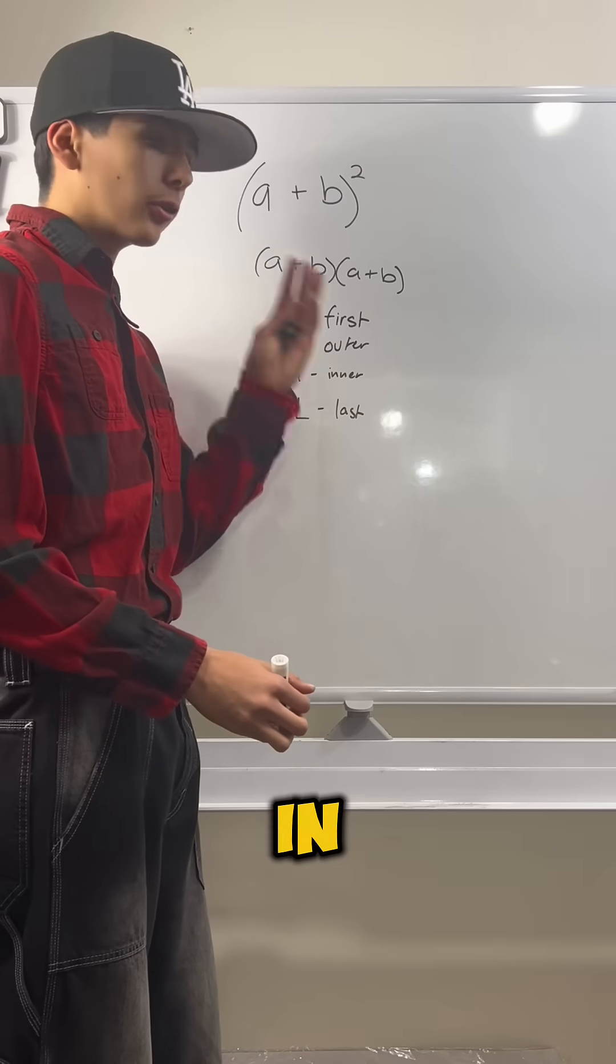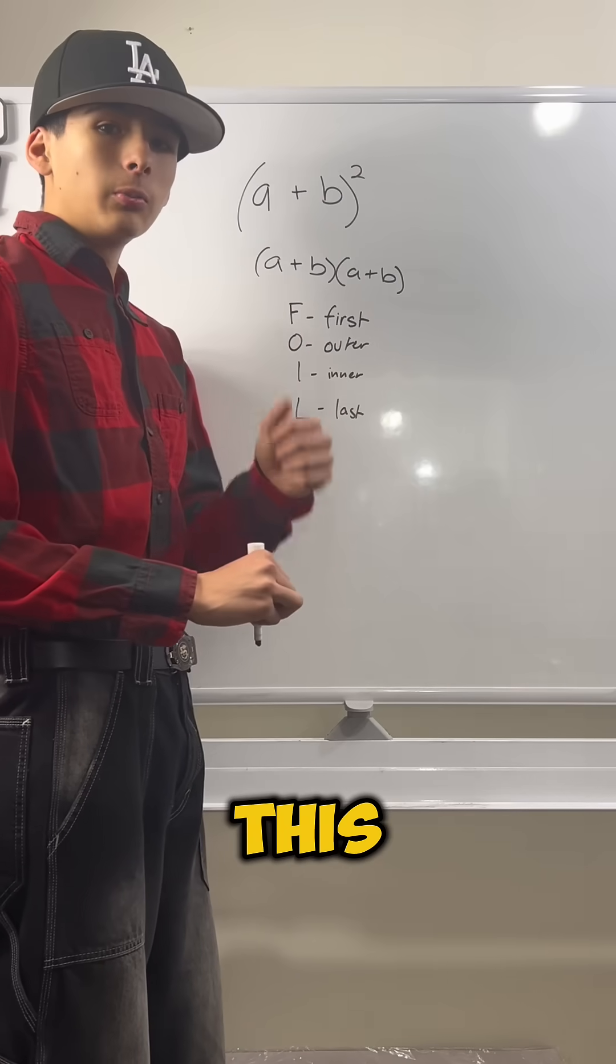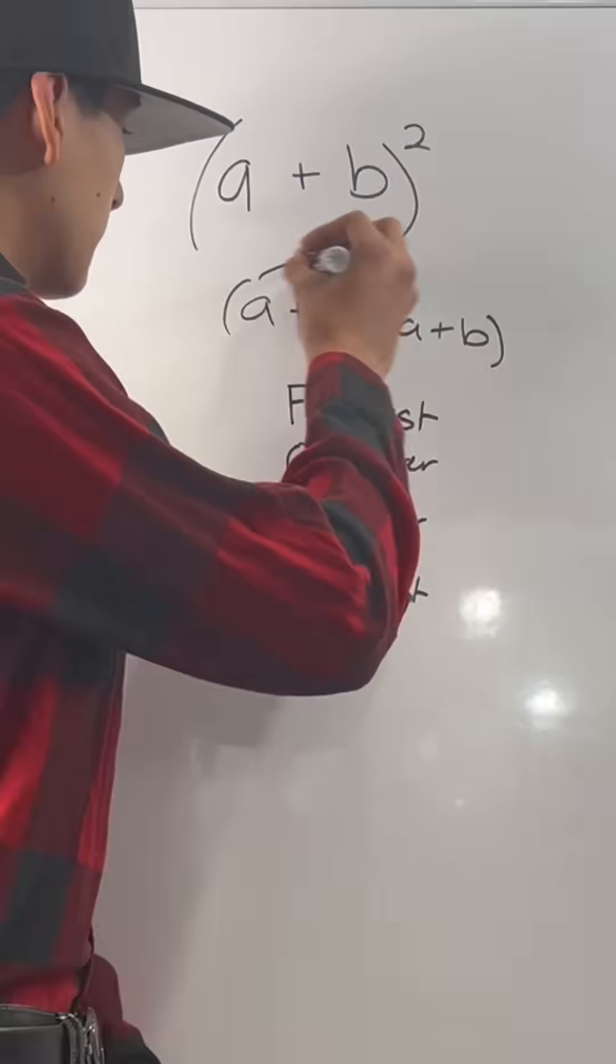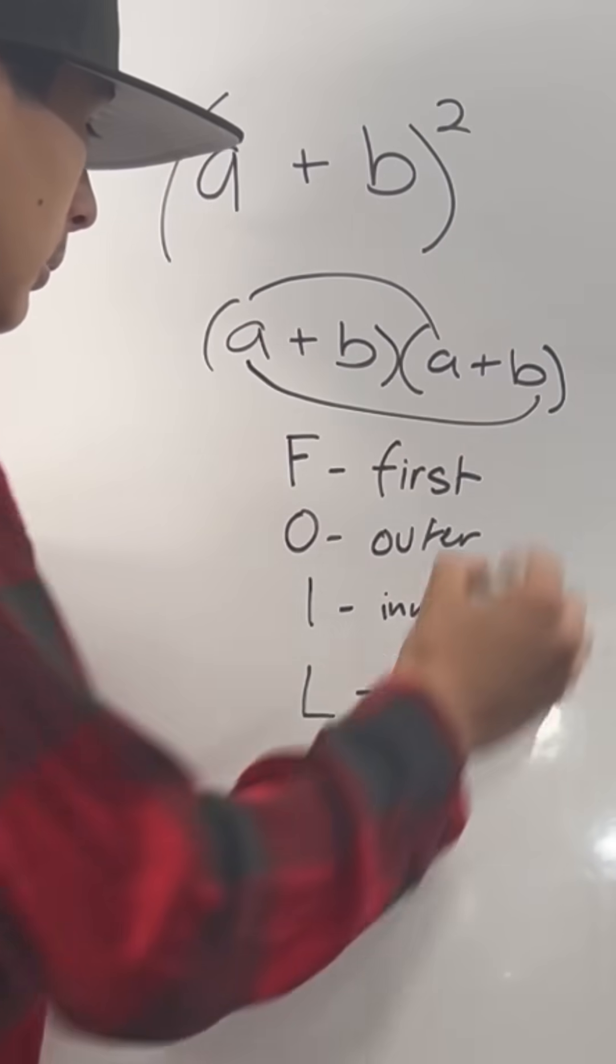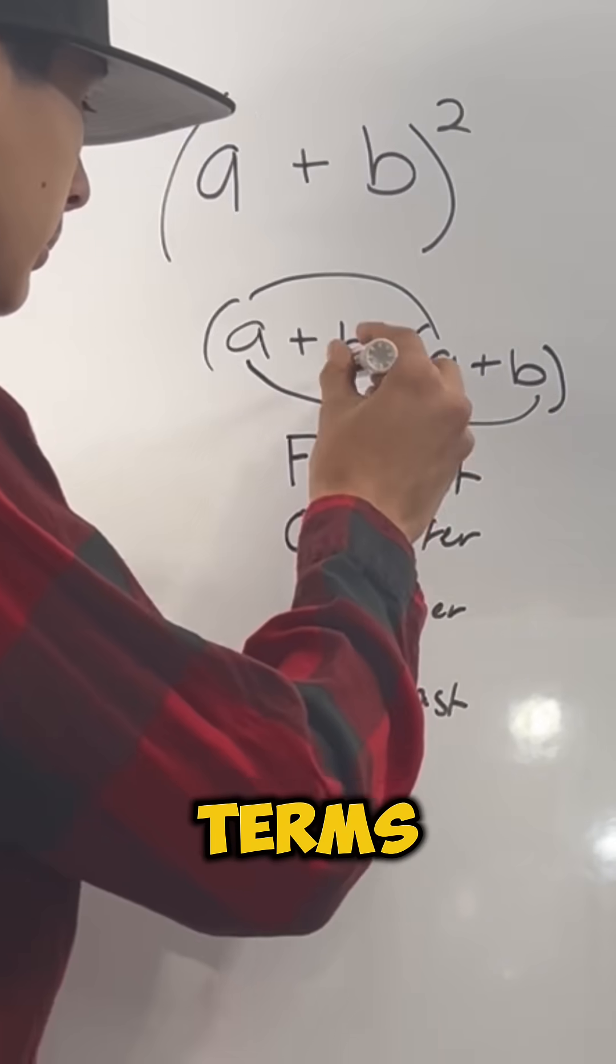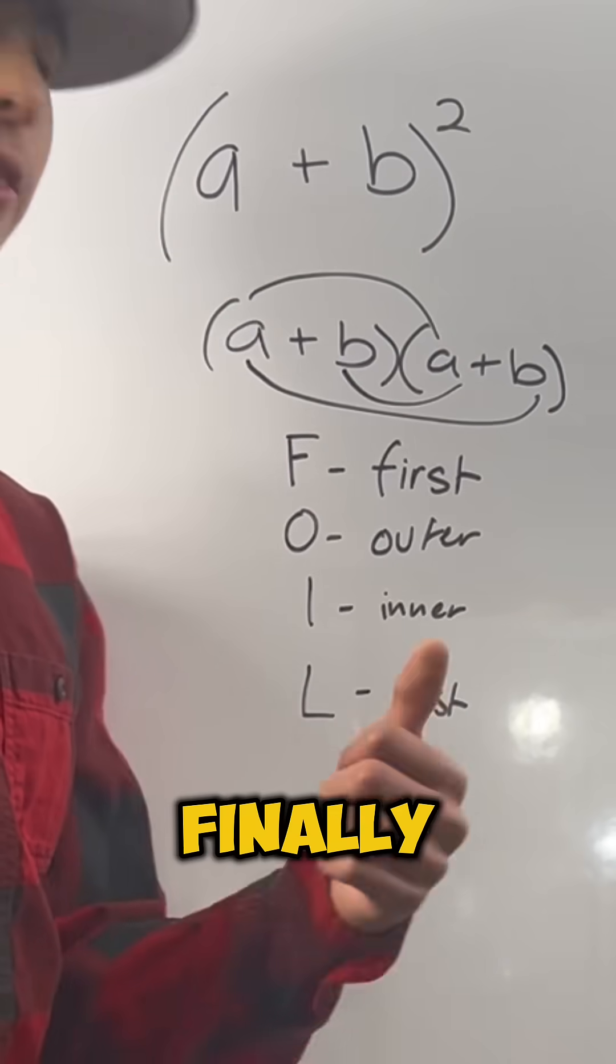And this says that in order to multiply binomials like this, you multiply the first terms, then the outer terms, then the inner terms, and finally, the last terms.